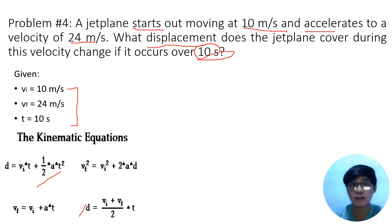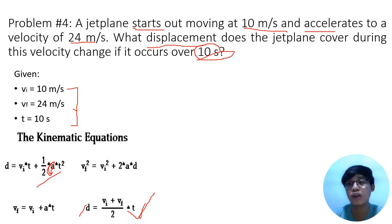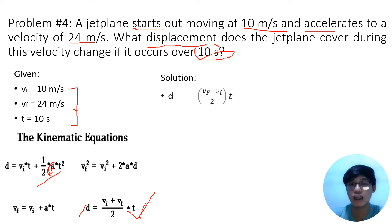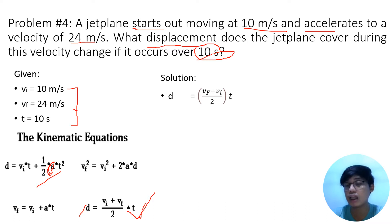Looking at the equations, one formula requires acceleration but we don't have acceleration here. So obviously, the formula we are going to use is the one that accommodates our three variables. We need to identify the equation that can accommodate our three given variables and displacement as what we are solving for.